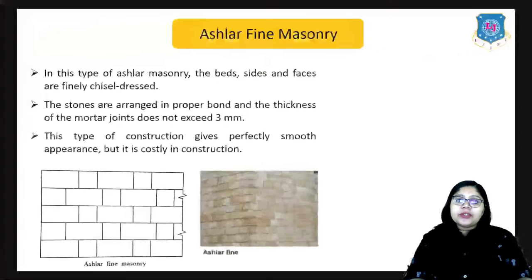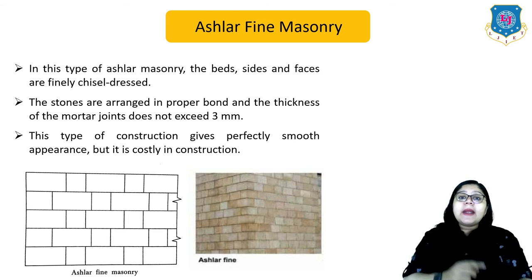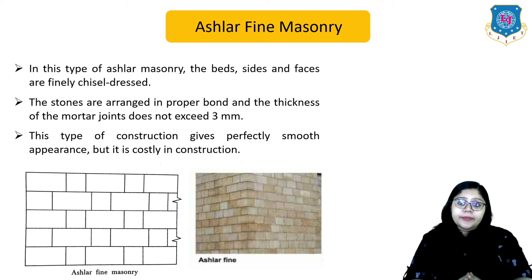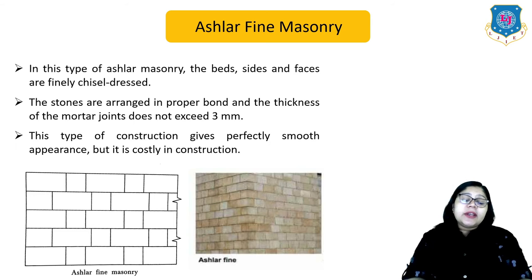In ashlar fine masonry, the beds, sides and faces are finely chisel-dressed. The stones are arranged in proper bond and the thickness of mortar joints does not exceed 3 mm. This type of construction gives a perfectly smooth appearance but is costly in construction.